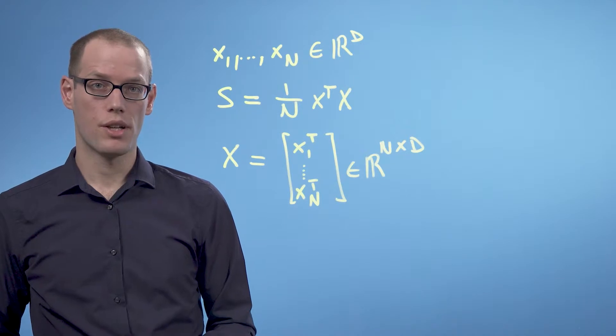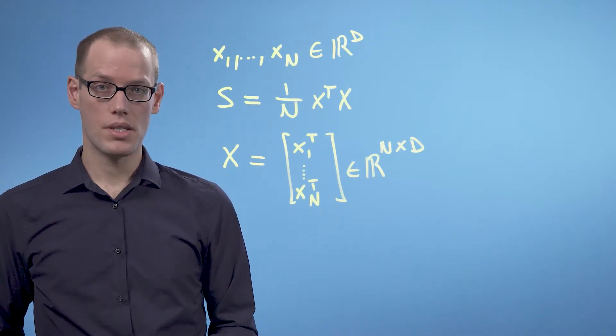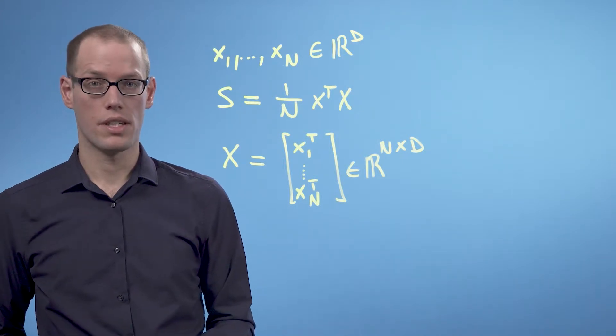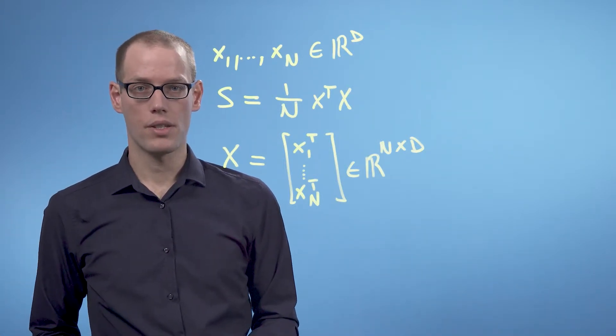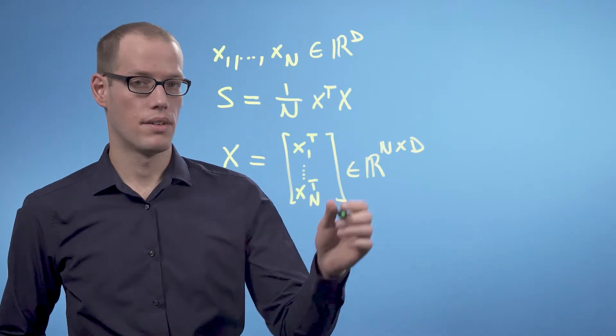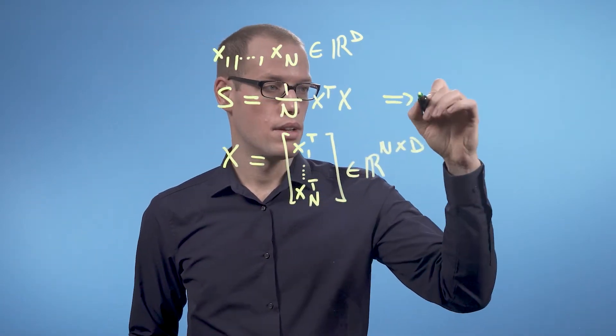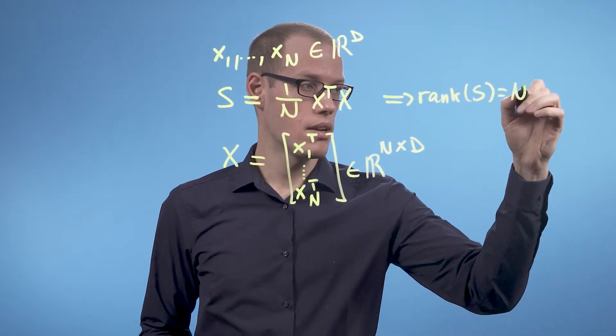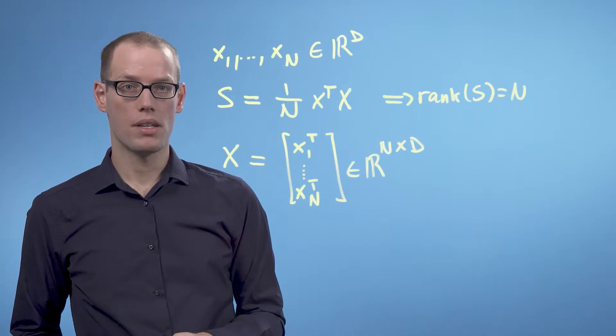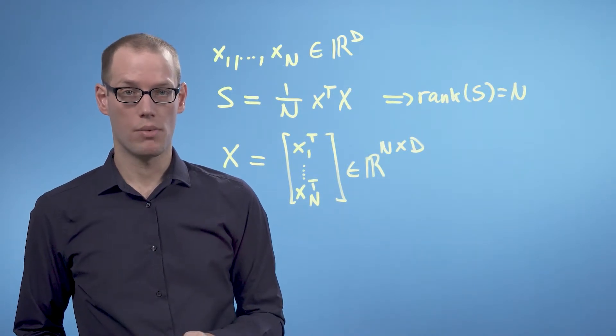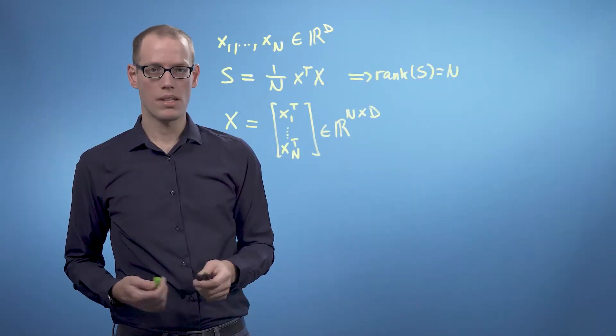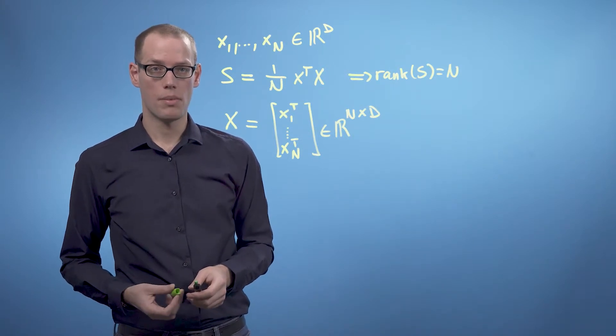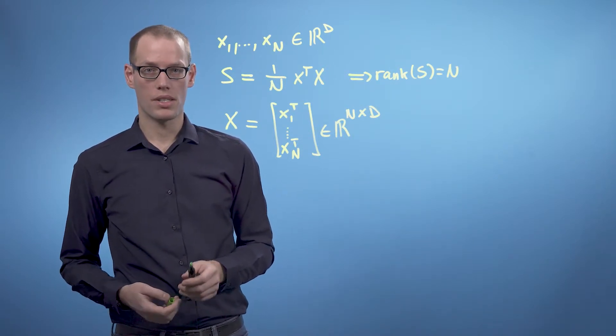We now assume that n is significantly smaller than d. That means the number of data points is significantly smaller than the dimensionality of the data. And then the rank of the covariance matrix is n. So rank of S equals n. And that also means it has d minus n plus 1 many eigenvalues which are 0. That means that the matrix is not full rank, and the rows and columns are linearly dependent. In other words, there are some redundancies.